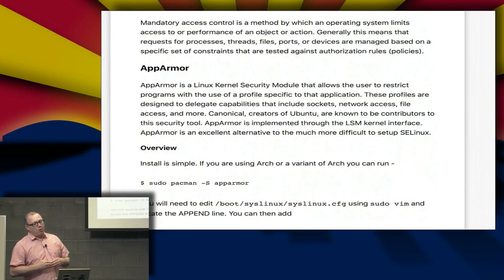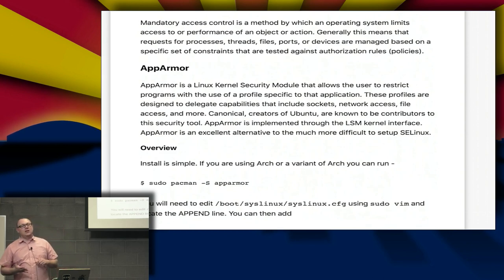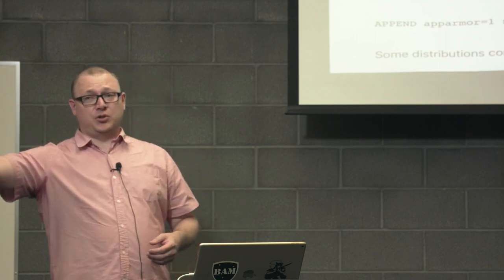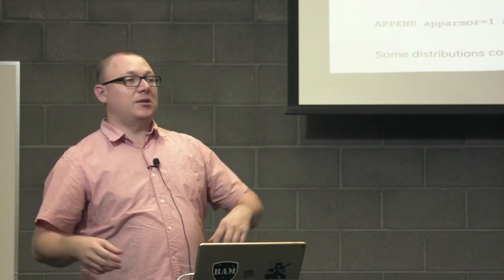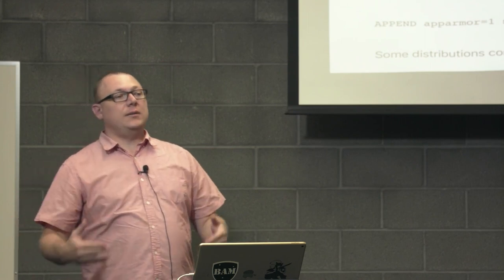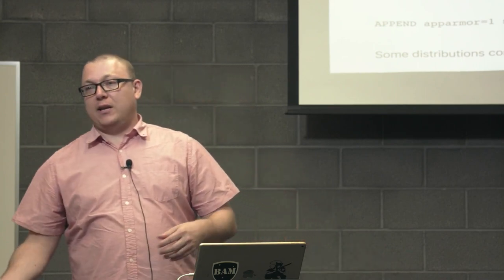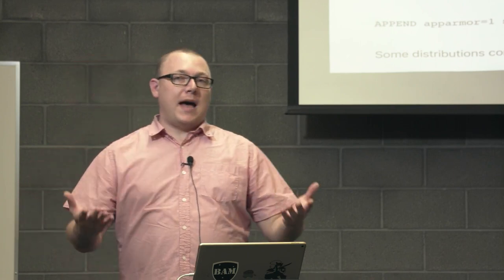Mandatory access control is a method by which an operating system limits access to or performance of an object or action. Requests for processes, threads, files, ports, or devices are managed based on a specific set of constraints tested against authorization rules. Now we're setting up policies and getting much more fine-grained. We can literally say this user can run Firefox or Chrome, but when Chrome pops up, it only has access to the downloads folder and only this section of the operating system. You have extremely fine-grained control — but with that comes great responsibility and the potential to really mess things up.